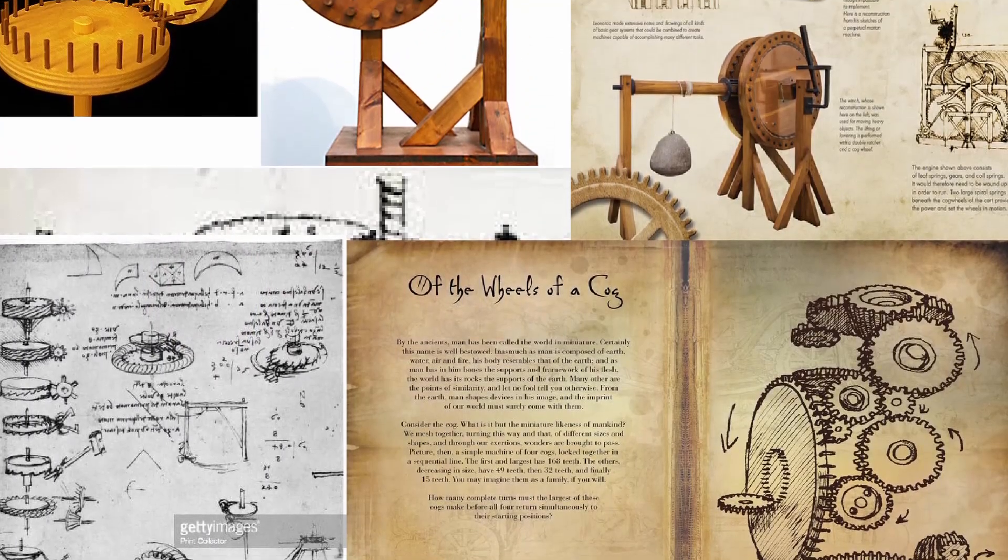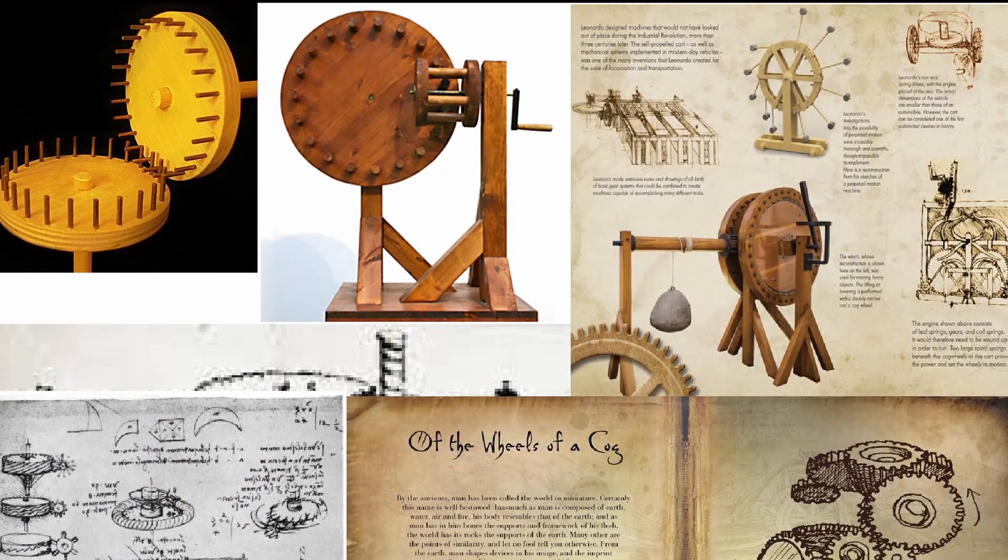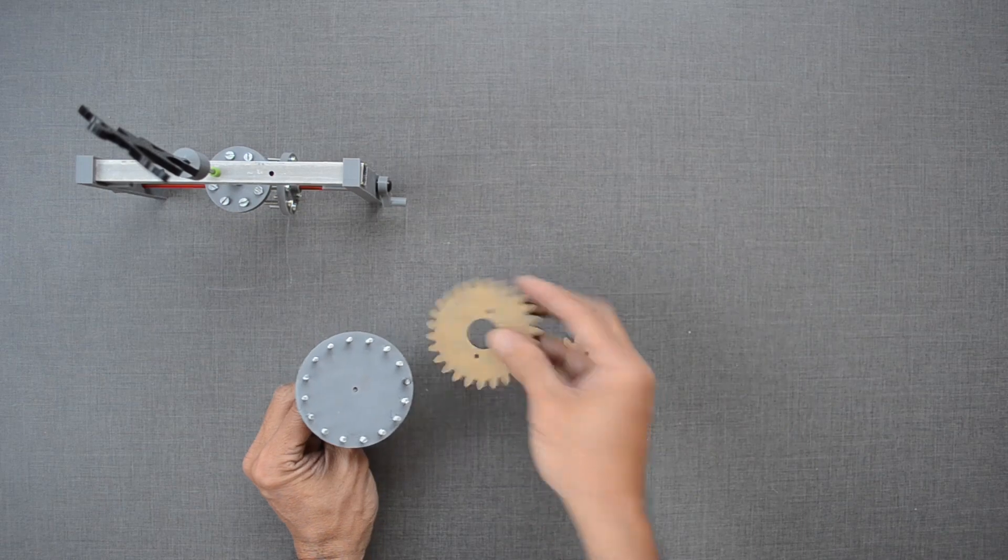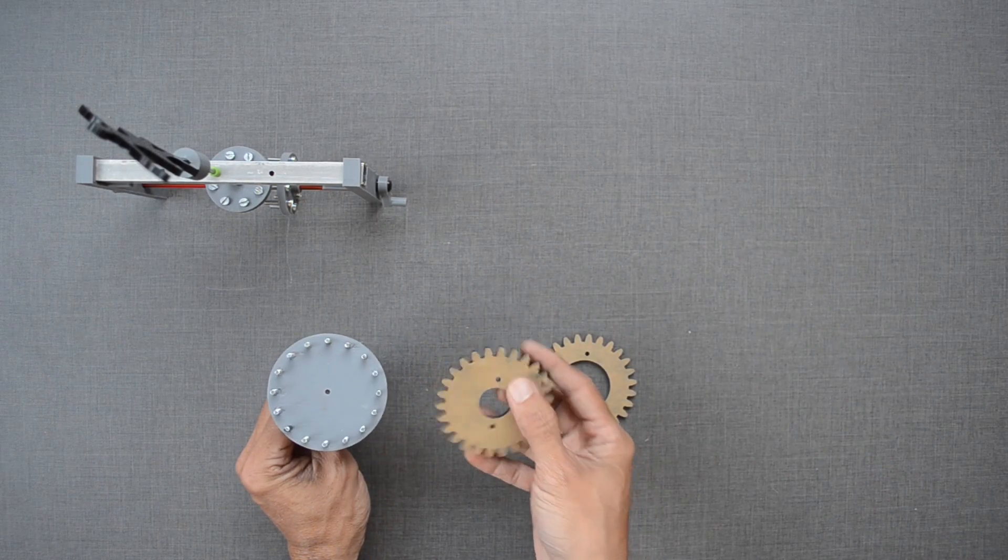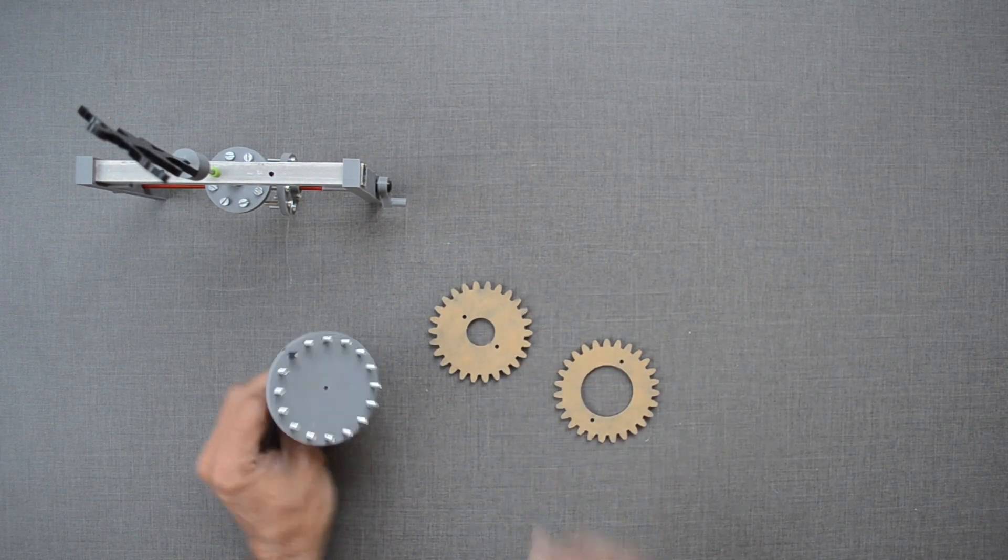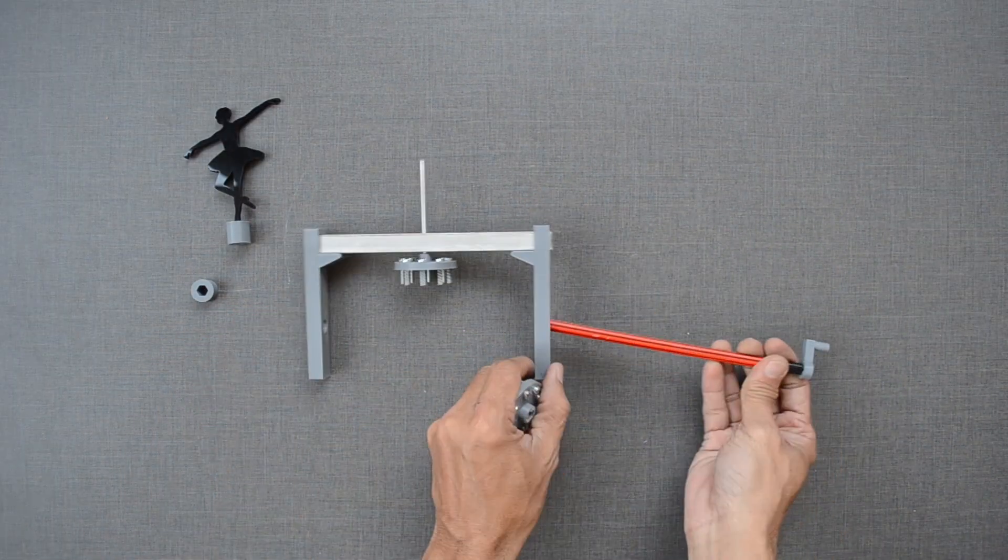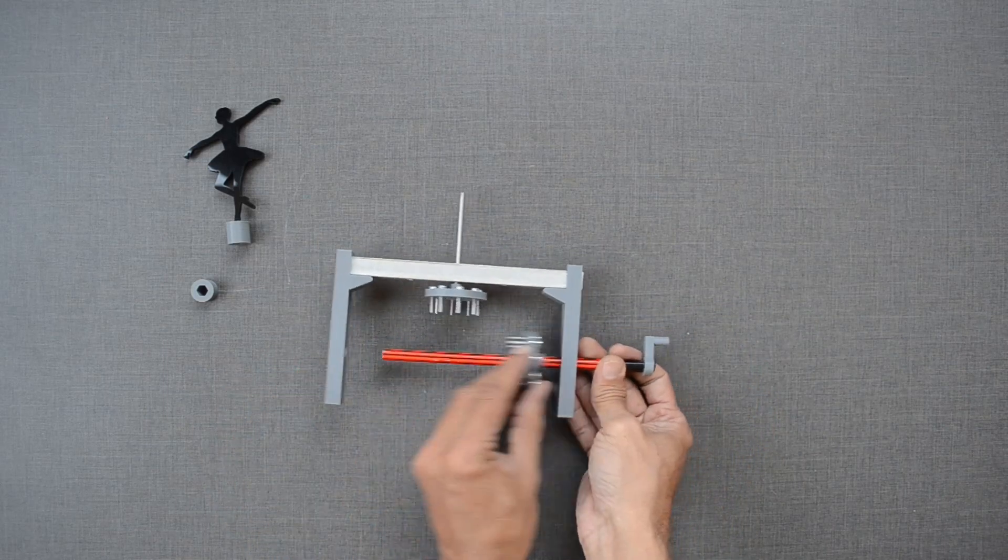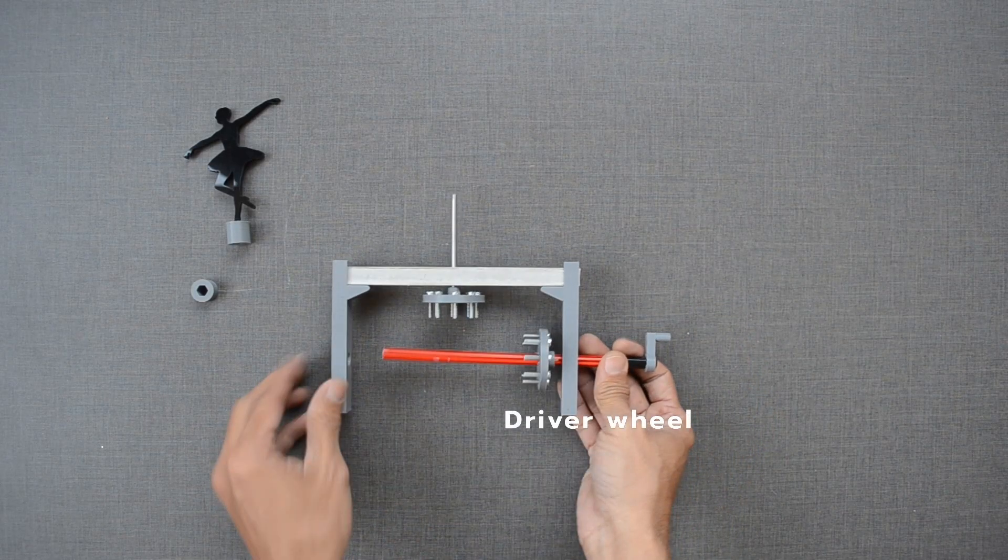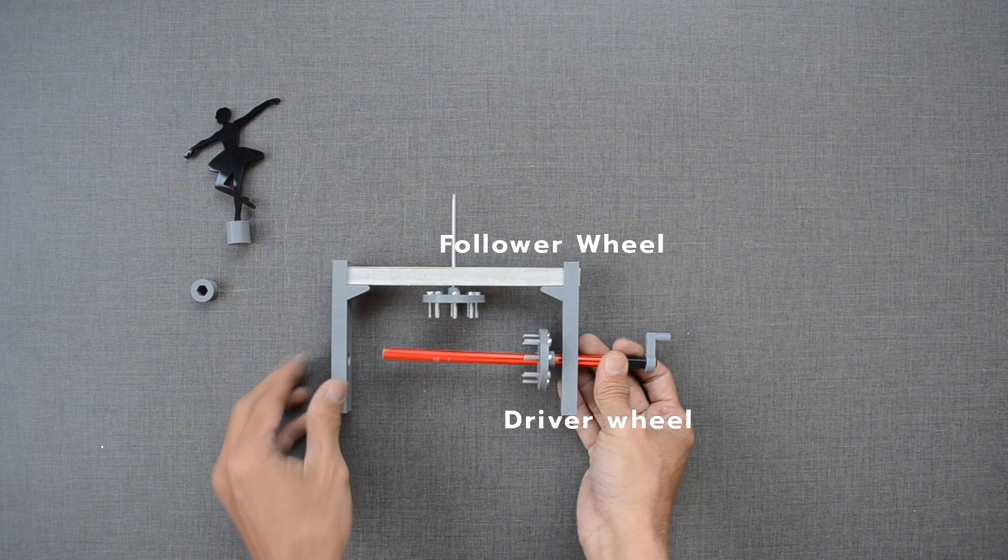Pinwheels were originally used by Da Vinci in his early inventions. These are very similar to gears. Instead of teeth, these have pins. Let us attach this pinwheel to the follower and this one will be placed on the shaft. We will call this a driver wheel and this one follower wheel.